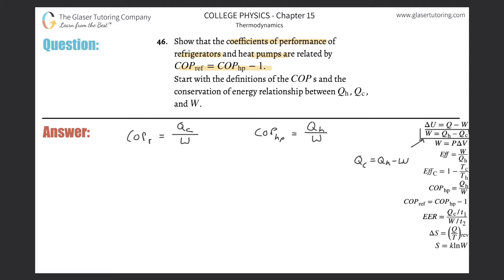Okay, what I'm going to do now is take this result, that Q sub C equals Q sub H minus the work, and I'm going to substitute that in for Q sub C in that equation.